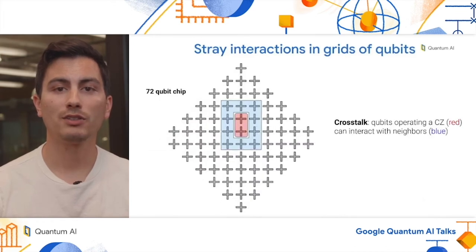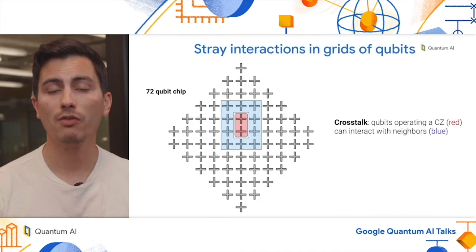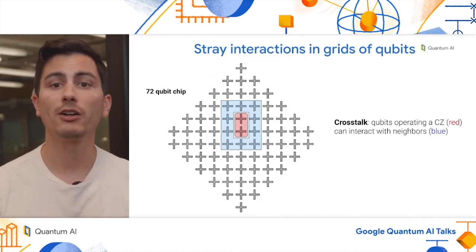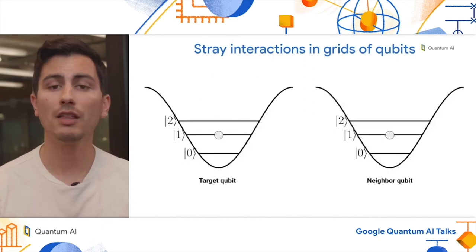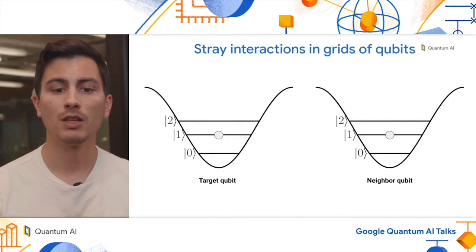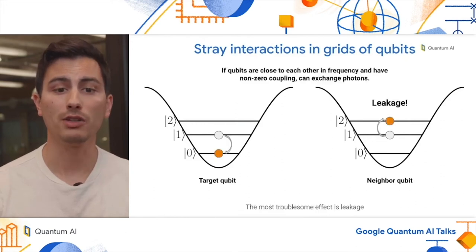Now, when you have two qubits, this is a very simple problem. However, in our experiments, we have many qubits all in a grid. So for instance, when you're operating a CZ on a pair of qubits, such as the ones highlighted in red, you can have stray interactions with all of the neighboring qubits, which are highlighted in blue. So what can happen in this particular case? Well, many things, but let me walk you through one particular bad case. So for instance, what if I had a target qubit, which is participating in a CZ, prepared in its state one, and it's adjacent to a neighboring qubit, which is also in its state one? Well, if these two qubits happen to be close to each other in frequency, and have a non-zero coupling between the two, they can actually exchange photons, and that can drive the target qubit into the state zero, and drive the neighboring qubit into a leakage state two.